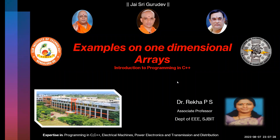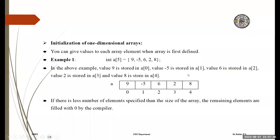Let us start with some examples on one-dimensional arrays. We already started with one-dimensional arrays; now we will see how to initialize them. You can give values to each array element when the array is defined. This is one way of initializing arrays — A of 5. You can initialize all five numbers: 9, minus 5, 6, 2, 8. This is how you initialize an array.